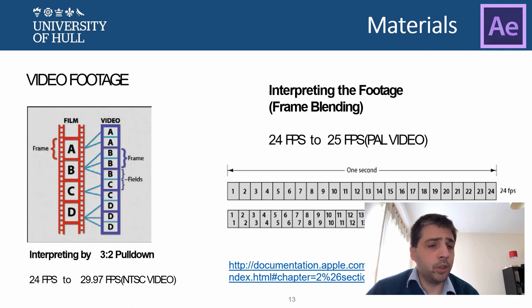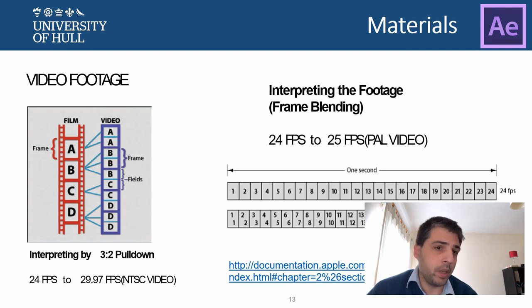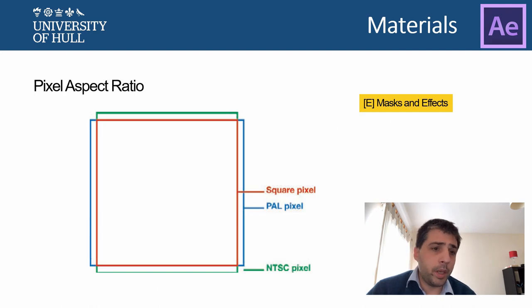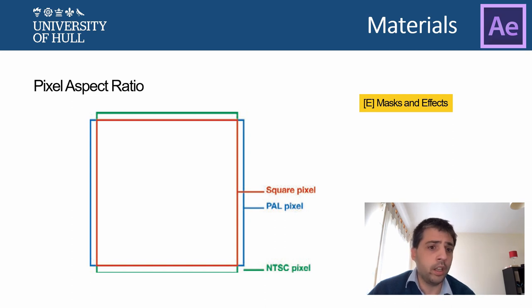Depending on the source of your material, you might need to interpret the footage — that means creating a frame blending that is compatible with the rest of the materials you are working with. This happens when you work with videos that have a different frame rate, for example a European PAL video at 25 frames per second mixed with an American, Japanese, or South American video following a different color system and frame rate. We won't cover all these aspects in depth, but we can provide references and sources to learn about them.